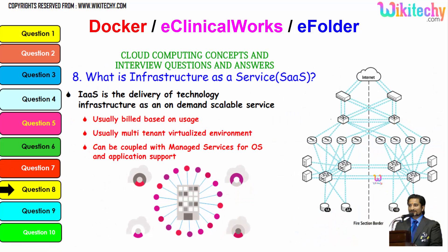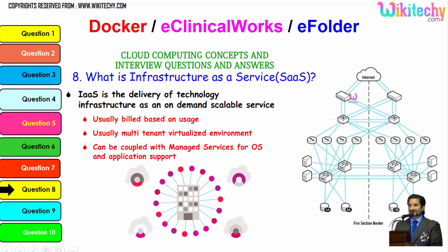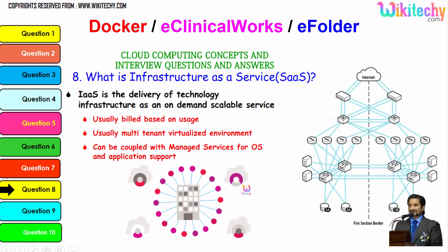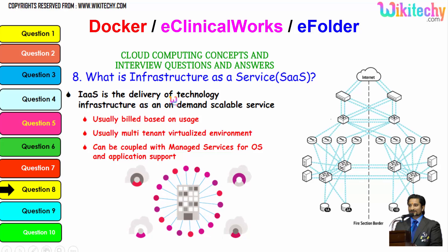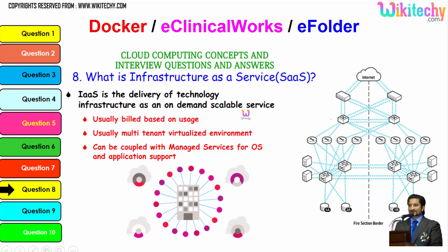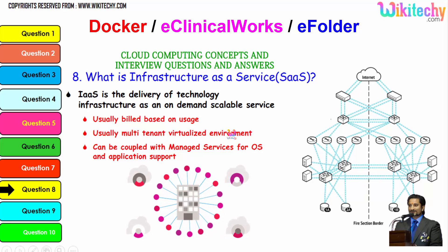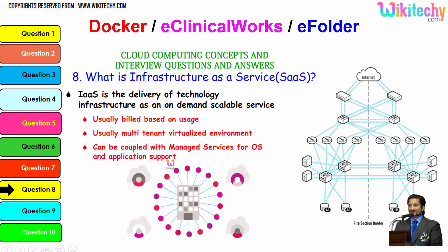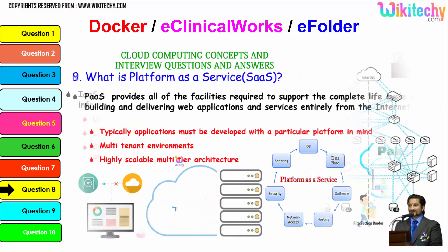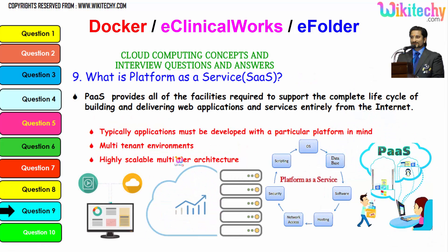Let's talk about Infrastructure as a Service. With IaaS, you will be allocated a server and you can set it up any way you want — whatever software you want, you can put it. IaaS is a delivery of technology infrastructure as an on-demand, scalable service built based on usage, usually multi-tenant virtualized, and can be coupled with managed services for OS and application support.